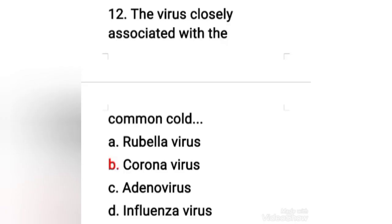Next question: the virus closely associated with the common cold — rubella virus, coronavirus, adenovirus, or influenza virus? The right answer is option B — the virus closely associated with the common cold is coronavirus. Coronaviruses are a group of related RNA viruses that can cause diseases in mammals and birds. In humans, they cause respiratory tract infections ranging from mild to lethal. Mild illness includes some forms of the common cold, while more lethal varieties can cause SARS, MERS, and COVID-19, which is causing an ongoing pandemic.